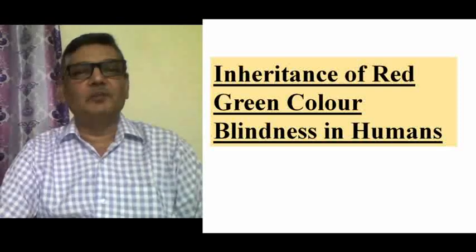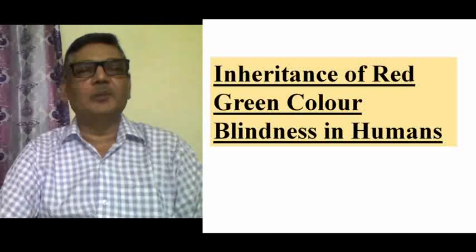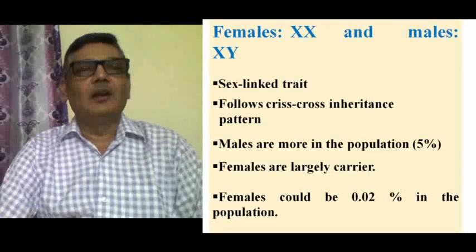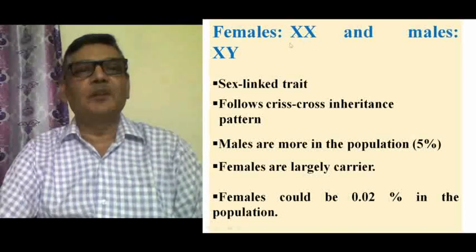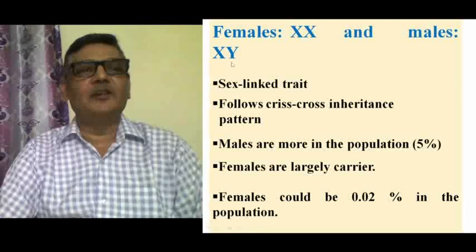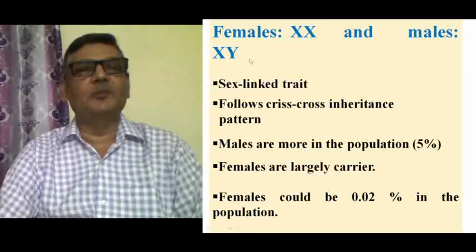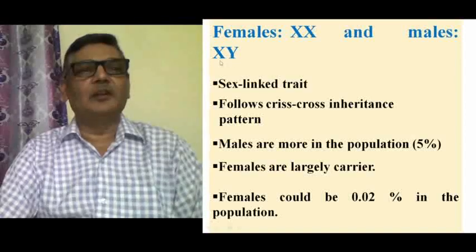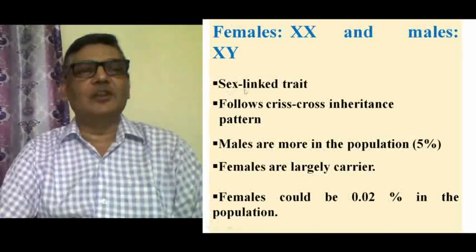Human females are XX type — they are homogametic, producing all gametes containing the X chromosome. Males are XY type and are heterogametic, meaning 50% of their gametes will have the X chromosome and the remaining 50% will have the Y chromosome. So males are hemizygous and heterogametic.